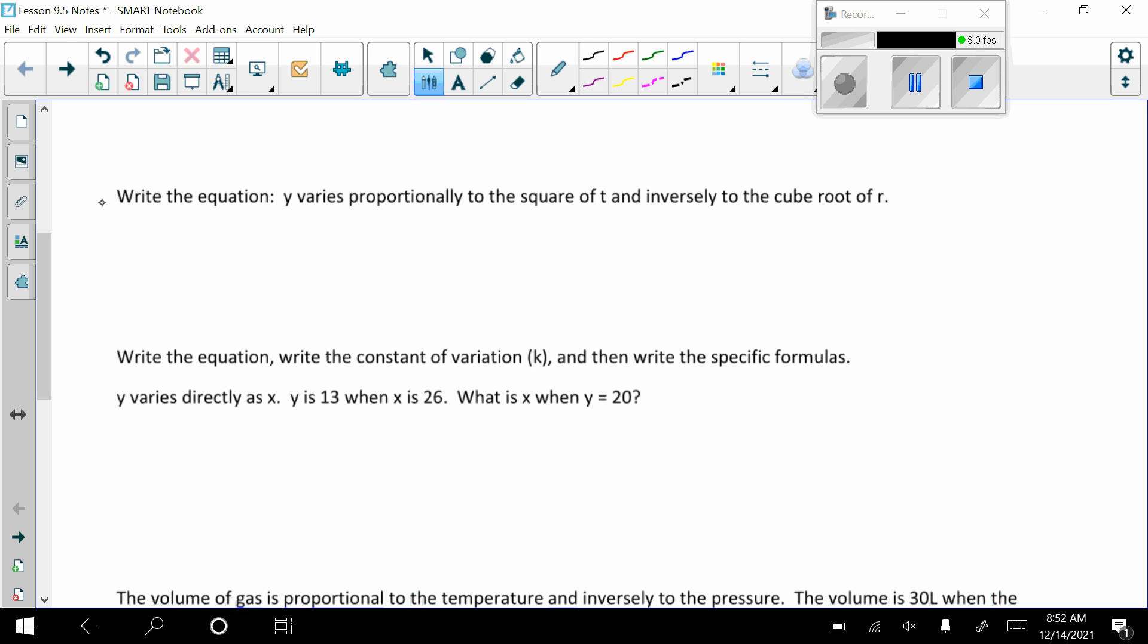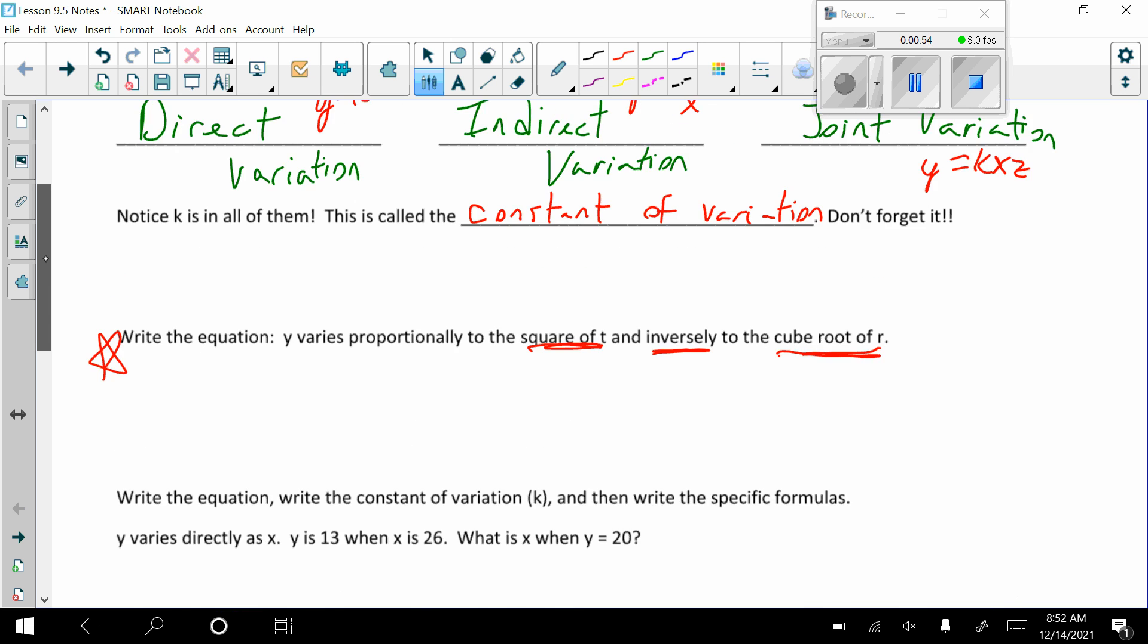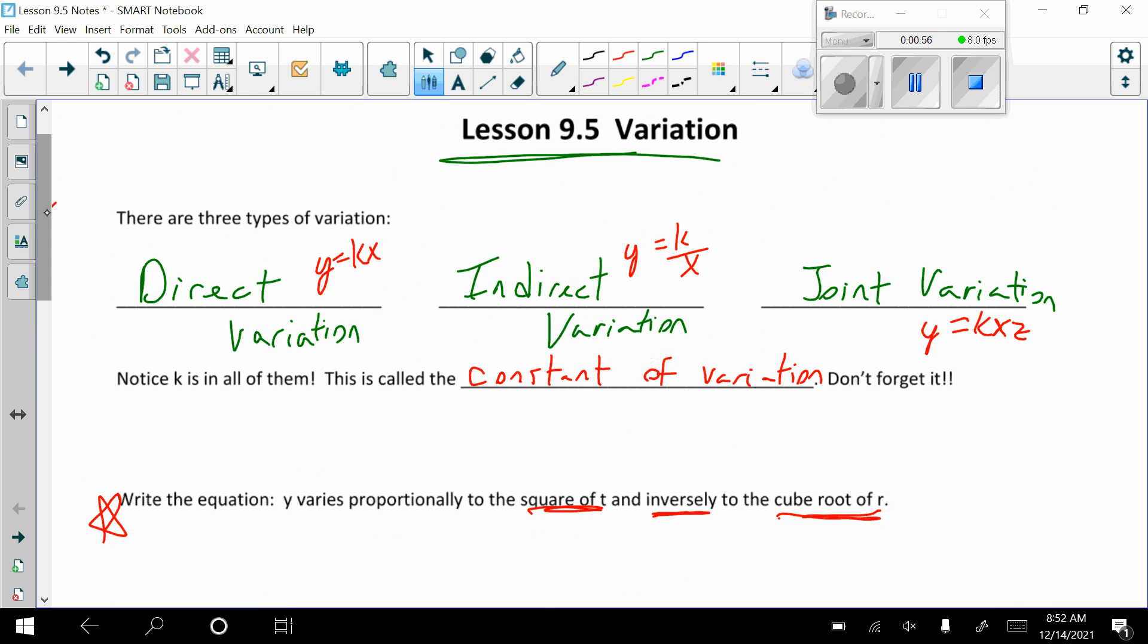Okay, this is how your problems are going to look. So Y varies proportionally to the square of t and inversely to the cube root of r. When you see indirect, sometimes you'll see them in problems as like inversely because it's inverse variation. So that is going to be kind of our setup. It varies proportionally. That is our code word for direct variation.